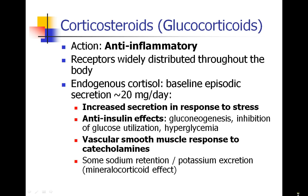Your adrenal gland secretes cortisol continuously, about 20 milligrams per day as a baseline secretion, but there are many things that occur during the day that will increase your secretion in response to stress and other stimuli. Steroids like cortisol have anti-insulin effects. As you would expect in the stressed state, your body will be encouraged to put more glucose into the bloodstream. This is called gluconeogenesis, and it will inhibit glucose utilization, leading to hyperglycemia.